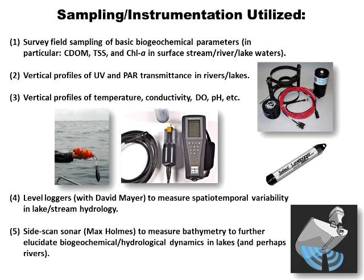We have a really unique opportunity to measure vertical profiles of light transmittance throughout the water column using a profiling radiometer, which you can see in the top right-hand corner. It measures light at different depths in the water column — very important to understand how ultraviolet radiation and photosynthetically active radiation (PAR) transmit in water bodies. We'll also have the opportunity to take vertical profiles of temperature, conductivity, dissolved oxygen, and pH.